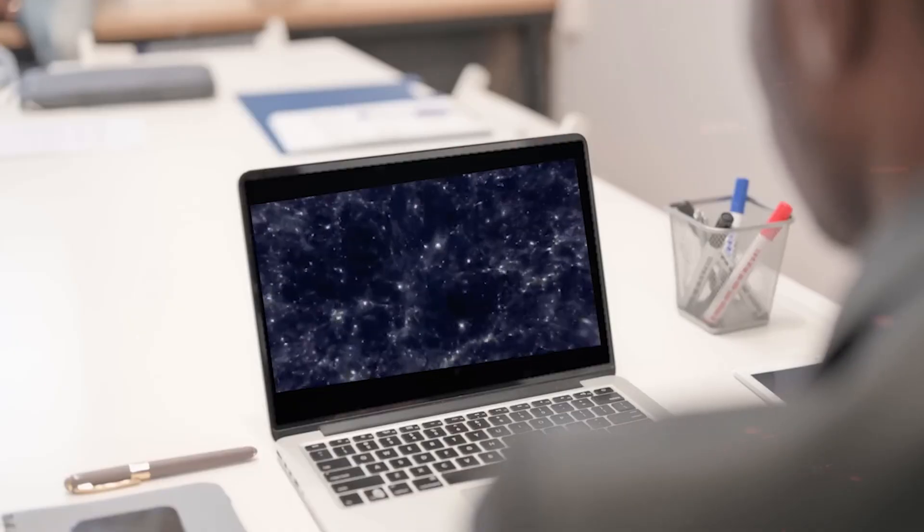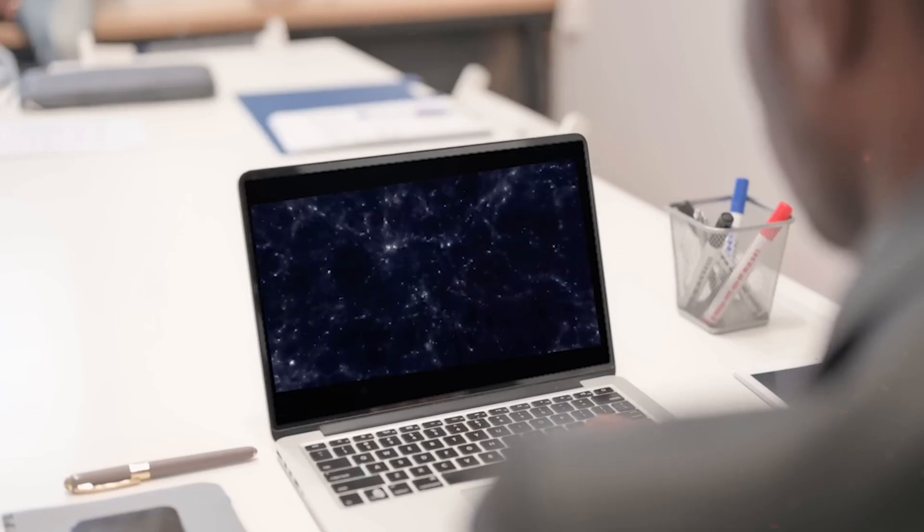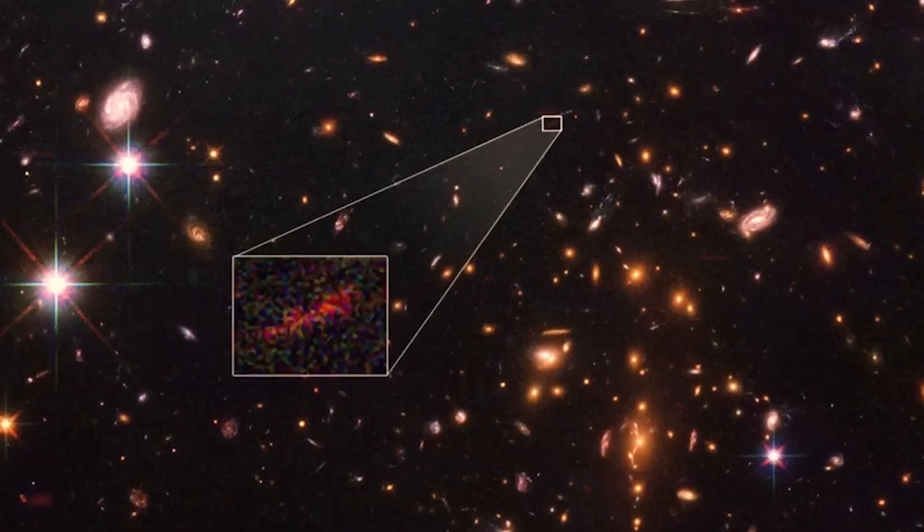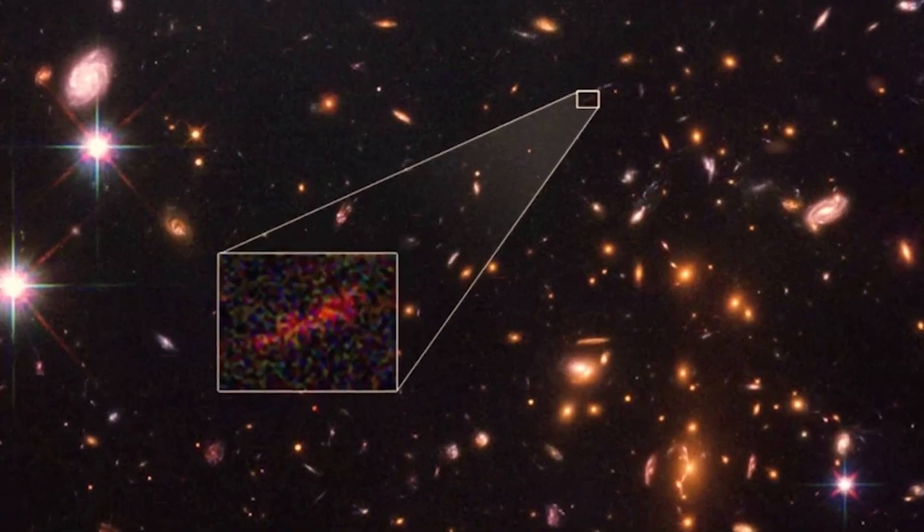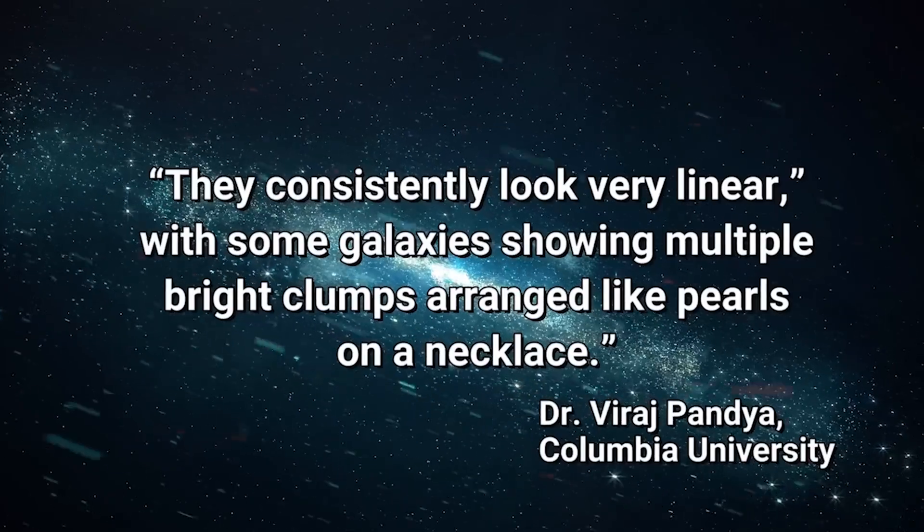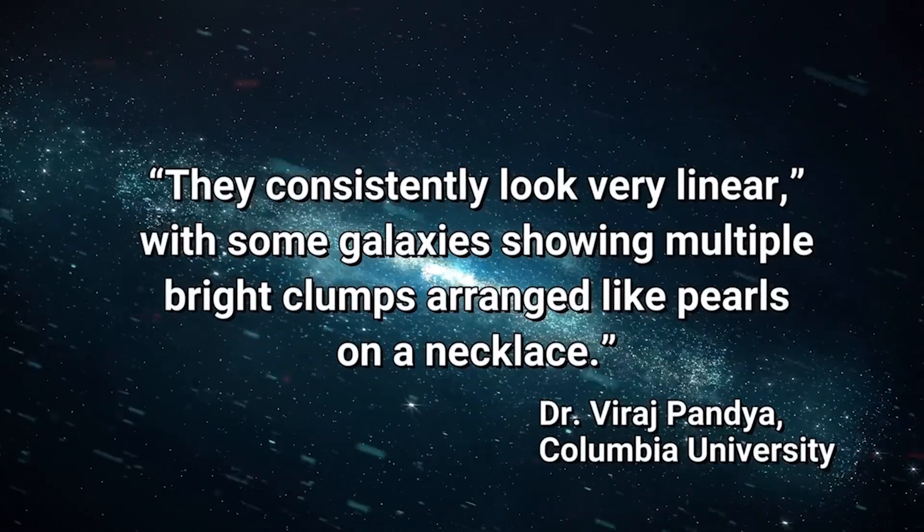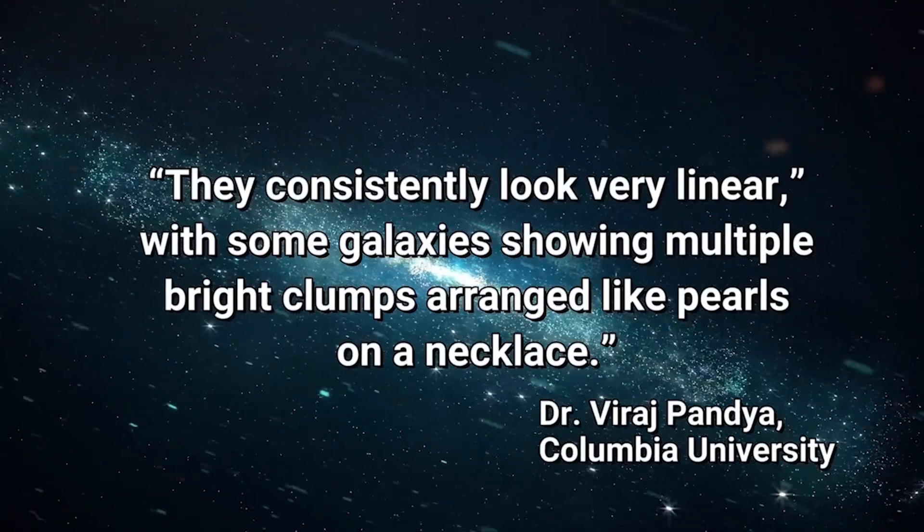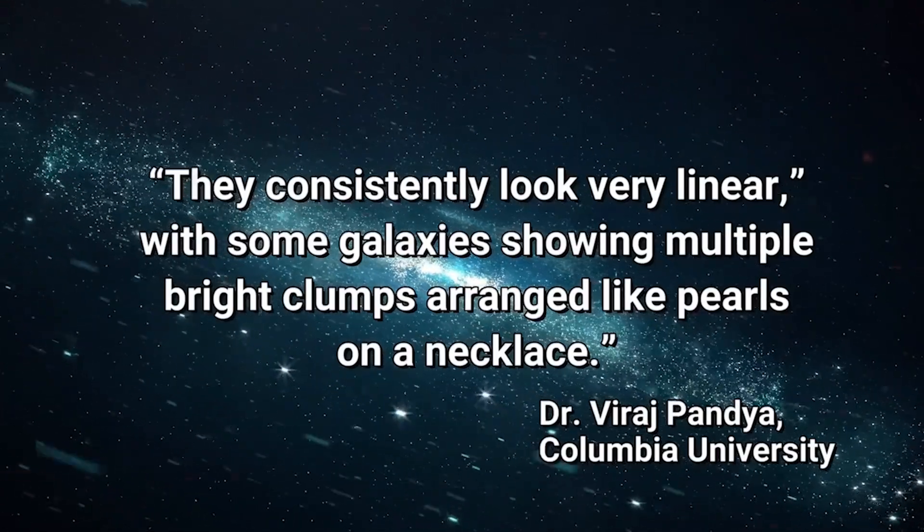Instead, astronomers are consistently encountering an abundance of shapes resembling cigars and bananas. They consistently look very linear, explained Dr. Pana, the study's lead author, with some galaxies exhibiting multiple bright clumps arranged like pearls on a necklace.